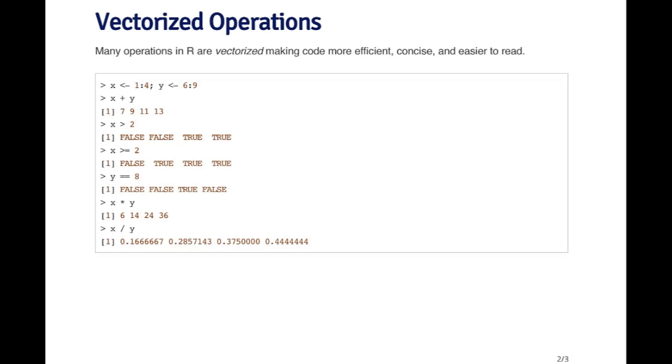And I want to add the two vectors together. When I say I want to add them, what I mean is I want to add the first element of X to the first element of Y, the second element of X to the second element of Y, etc., the third element to the third element. In other languages, you might have to write a loop to do that. But in R, you can just use the plus on the two vectors and it will add them together. So X plus Y adds one to six, two to seven, three to eight, and four to nine. So you get the vector seven, nine, 11, 13.